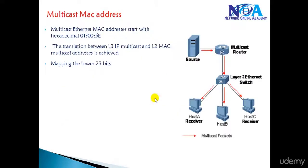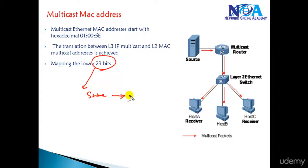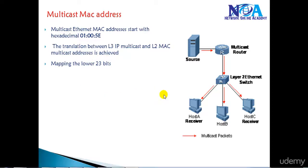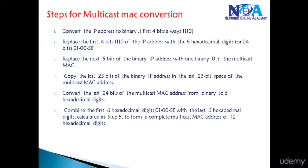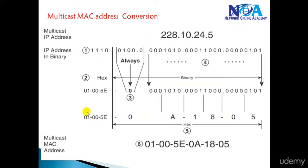The last 23 bits are taken directly from the IPv4 group address and converted into equivalent hexadecimal format to form the MAC address. The multicast MAC address always starts with 01005E.